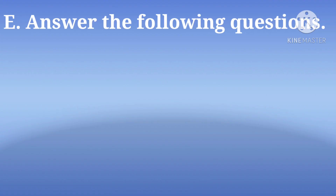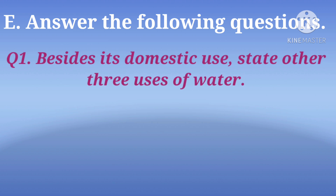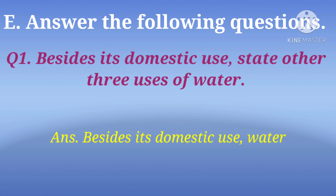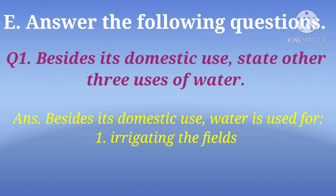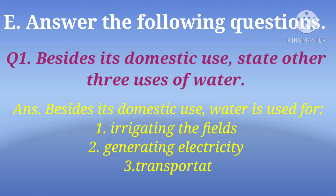The first question is: besides its domestic use, state other three uses of water. The answer is: besides its domestic use, water is used for irrigating the fields, generating electricity, and transportation.